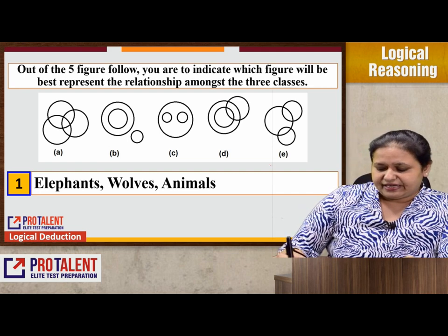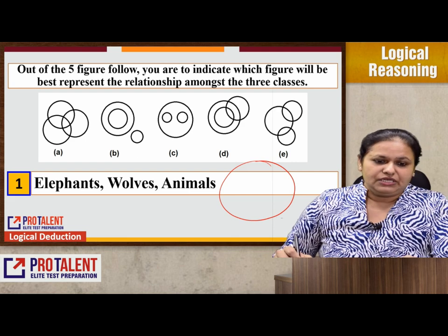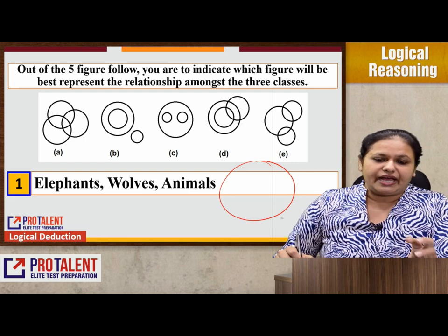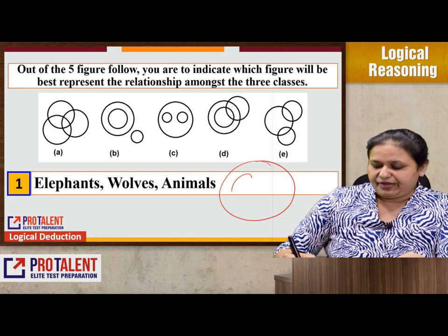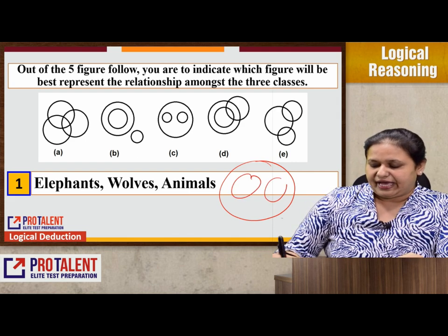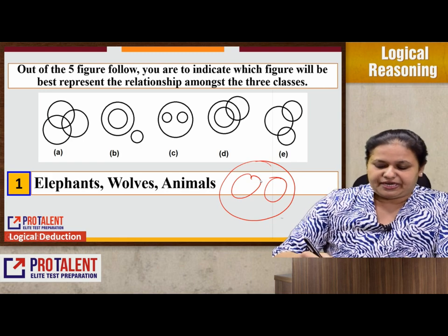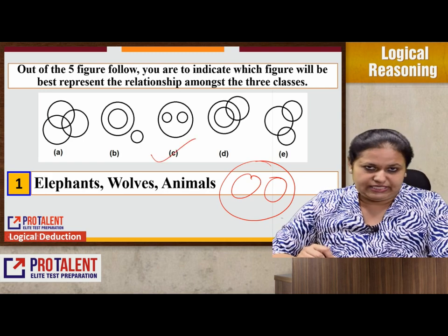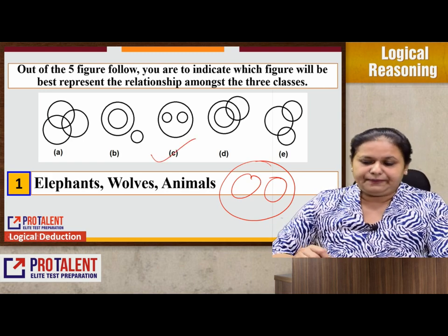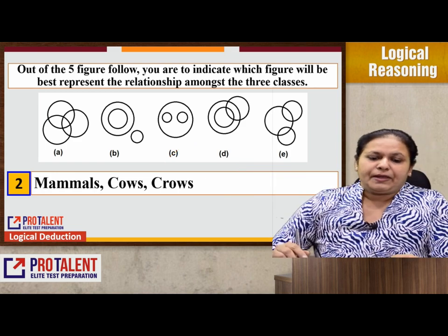If I take animals as the largest circle, then elephants and wolves are also one type of animals. So the best answer I am getting here is option C.